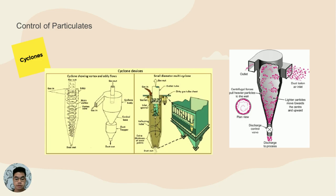Cyclones. Cyclones are a type of technology which is part of the group of air pollution controls collectively referred to as pre-cleaning units, because they are often used to reduce the inlet loading of particulate matter to downstream collection devices by removing larger abrasive particles.